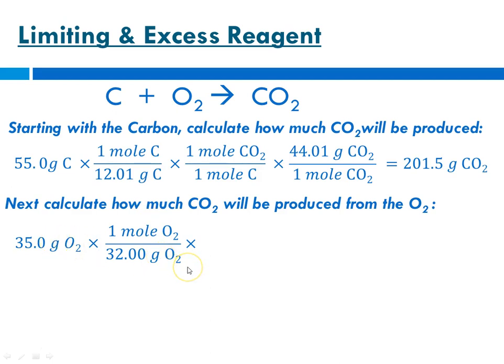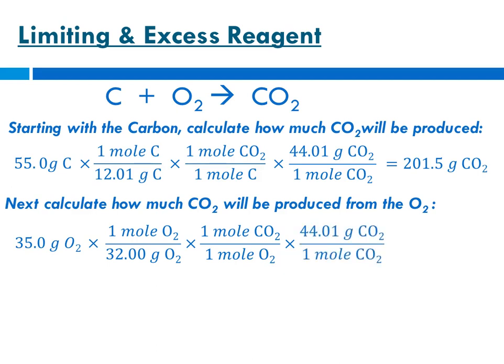Now we're at moles of oxygen. We use the mole ratio to get to moles of carbon dioxide — it's also a 1-to-1 mole ratio, so you get 1 mole of carbon dioxide for every 1 mole of oxygen. What we want is in the numerator and what we're getting rid of is in the denominator. Now we're at moles of carbon dioxide, and we multiply by the molar mass, 44.01 grams per mole, to get from moles of CO₂ to grams of CO₂.